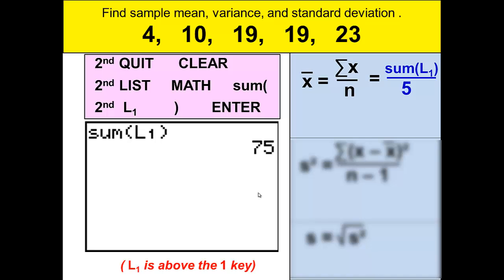Now you'll press second, then list, over to math, and then choose sum. Now we need to tell the calculator what we need to sum, which list we want to sum. And our data is in list 1, and list 1 is above the 1 key. So we'll press second, L1, and close the parentheses, and then press enter.